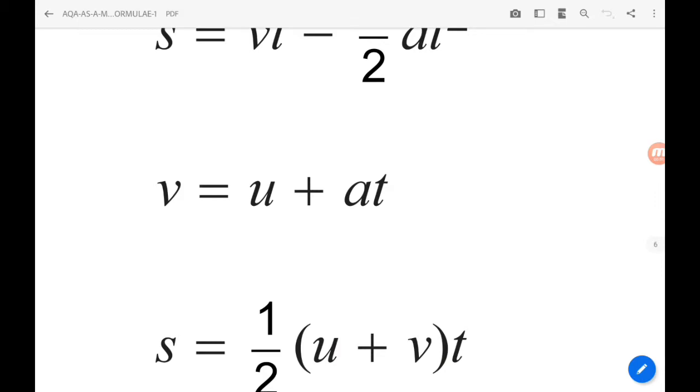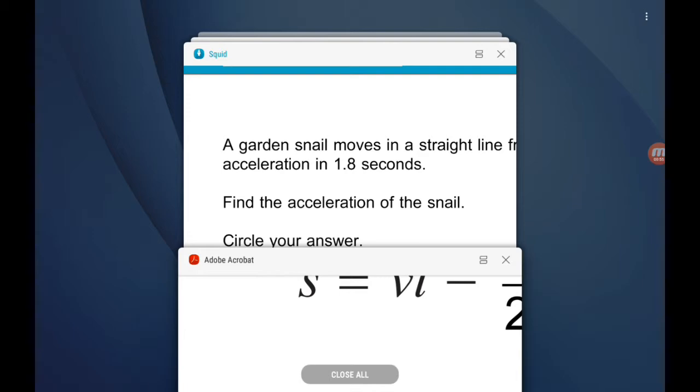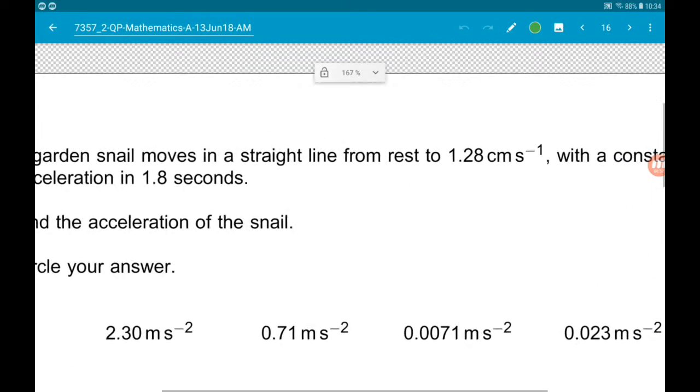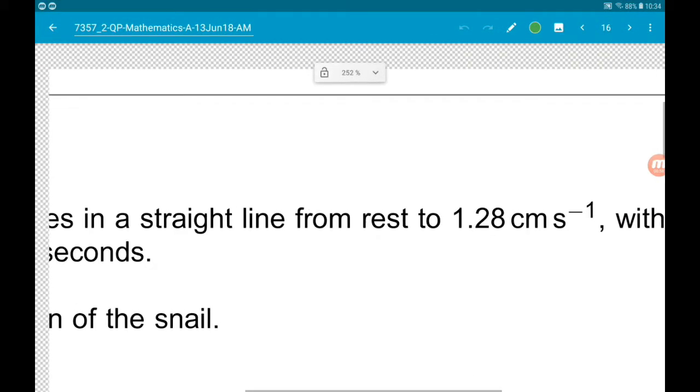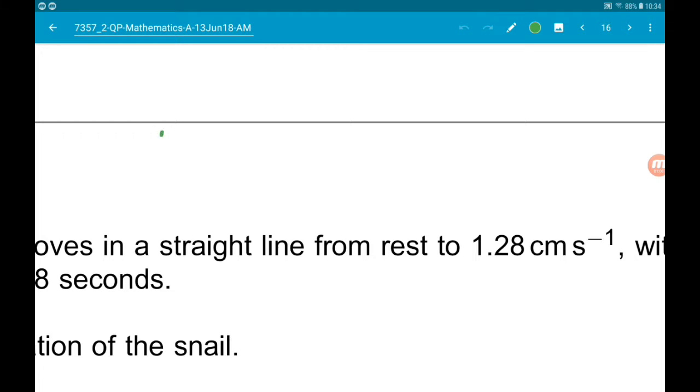v equals u plus at. So we know that the snail starts at rest, so u is zero. v, its final velocity, is 1.28 centimeters per second, so we need to turn that into meters.